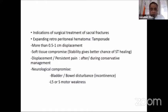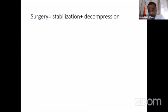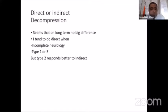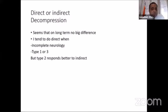L5 and sacral motor weakness is sometimes present. Surgery comprises both decompression and stabilization. On long-term follow-up, there is no big difference in results between direct and indirect decompression. My preference is to perform direct decompression in incomplete neurology, to give the best chance for recovery in type 1 and type 3. For type 2, the transforaminal type, I tend to use indirect methods of decompression in the form of good reduction of the fracture.